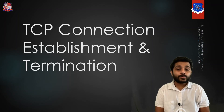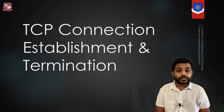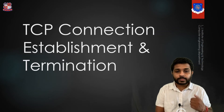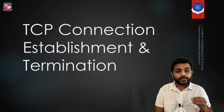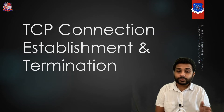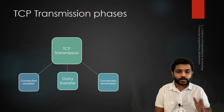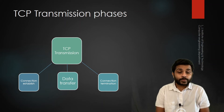Today we are going to see how data transfer is done in the Transmission Control Protocol. In TCP there are mainly three phases: connection establishment, data transfer, and termination. Any device using the TCP protocol has to follow these three phases. Now let's see how these three phases work.